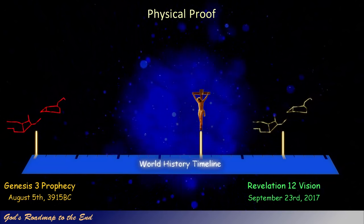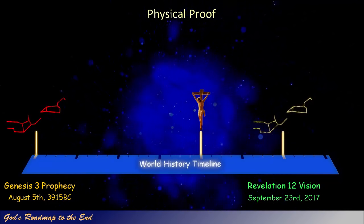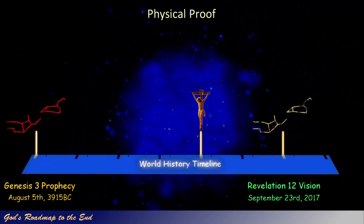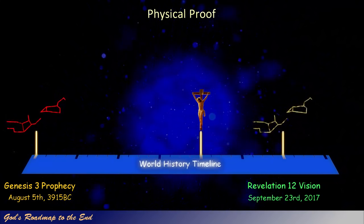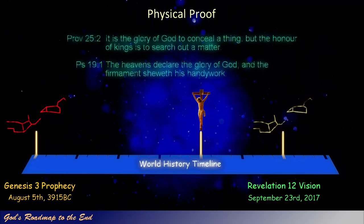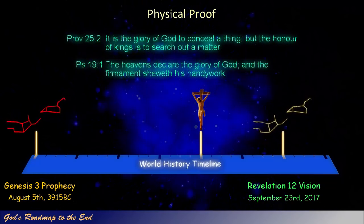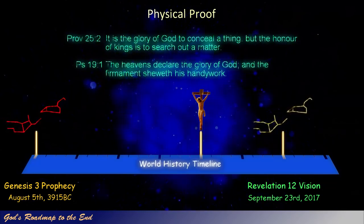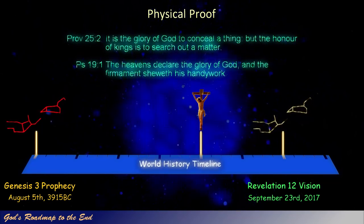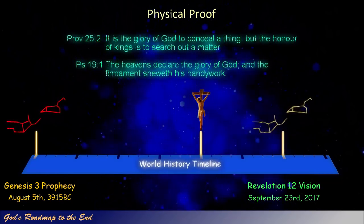Can we find any evidence in God's word that shows us that it was his intention to hide information in this way? I believe the following two passages confirm this, and that the heavens contain a hidden message that we will uncover as we continue. Proverbs 25 verse 2: 'It is the glory of God to conceal a thing, but the honor of kings is to search out a matter.' Psalms 19 verse 1: 'The heavens declare the glory of God, and the firmament show of his handiwork.'